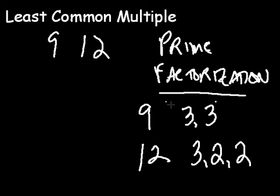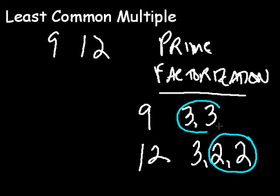Now what we're going to do is we're going to circle the greatest occurrence of each of the prime factors. So we have 2 appears twice in 12, and 3 appears twice in 9.